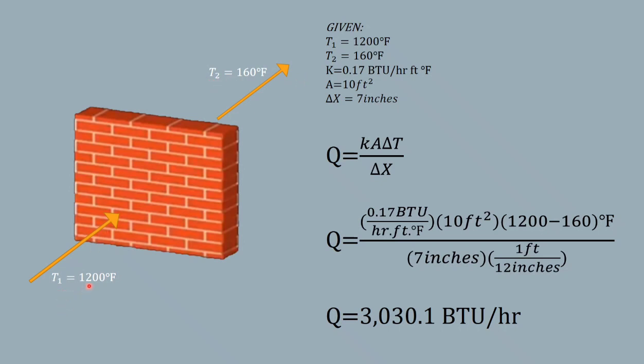So this will be our T2, and this will be our T1. 1200°F, and T2 is 160°F. So after we put the given here: T1 is 1200°F, T2 is 160°F, so our k is 0.17 BTU per hour feet Fahrenheit, and our A is 10 feet squared.